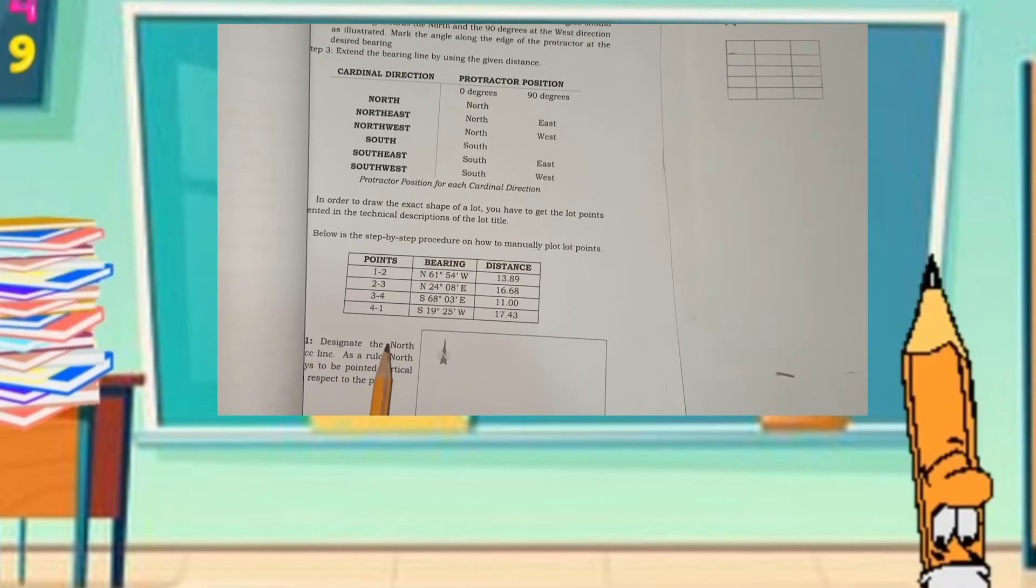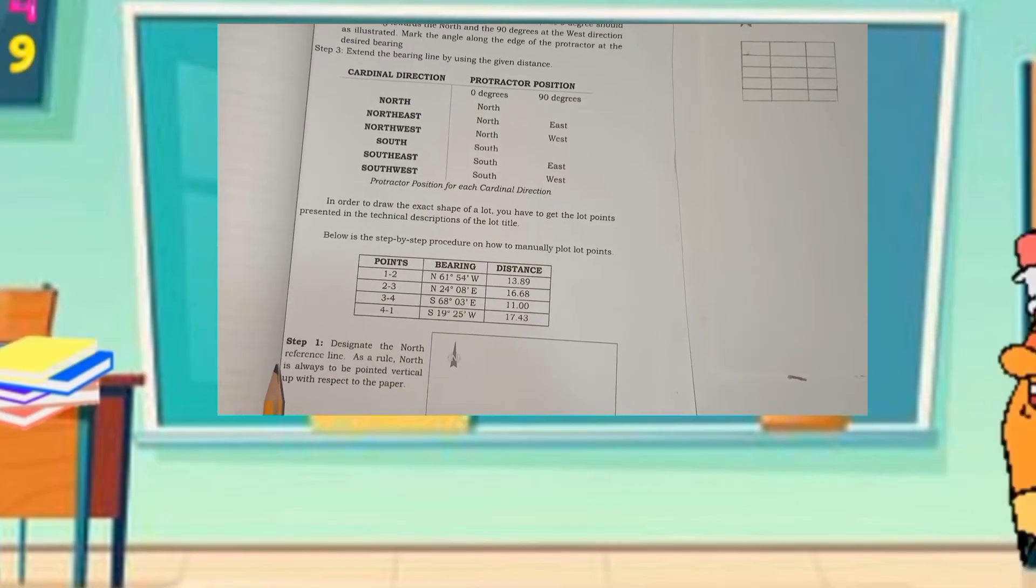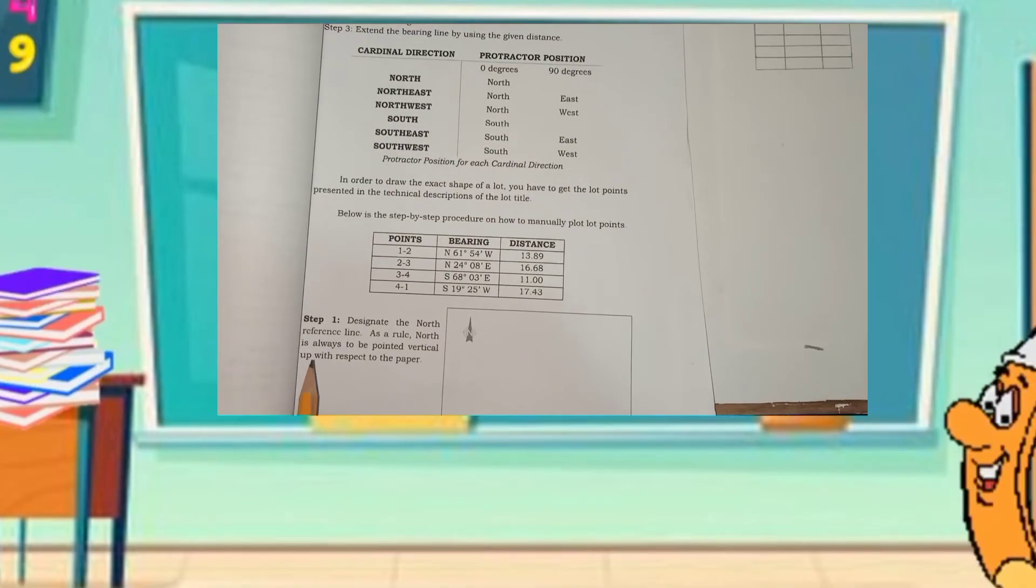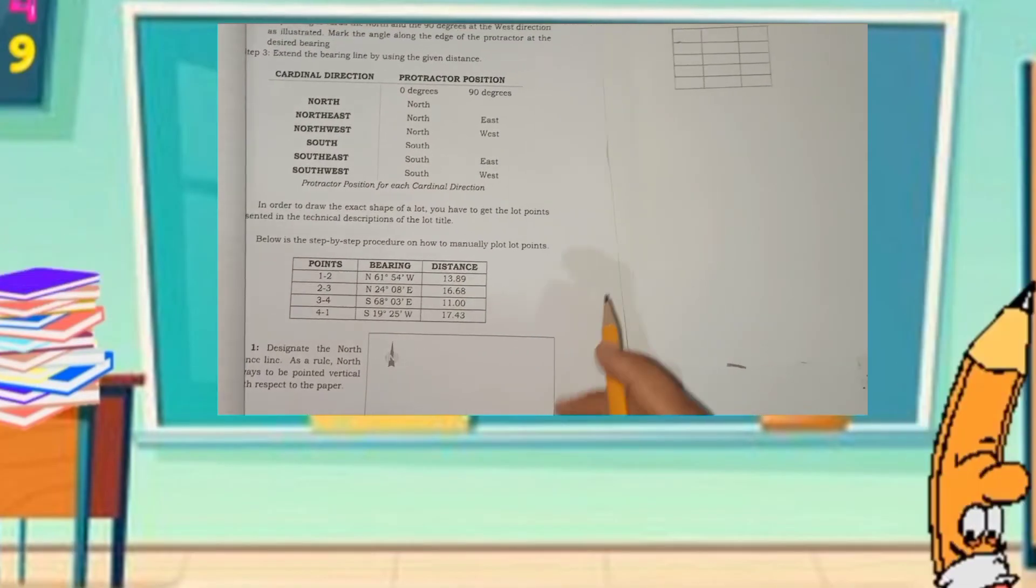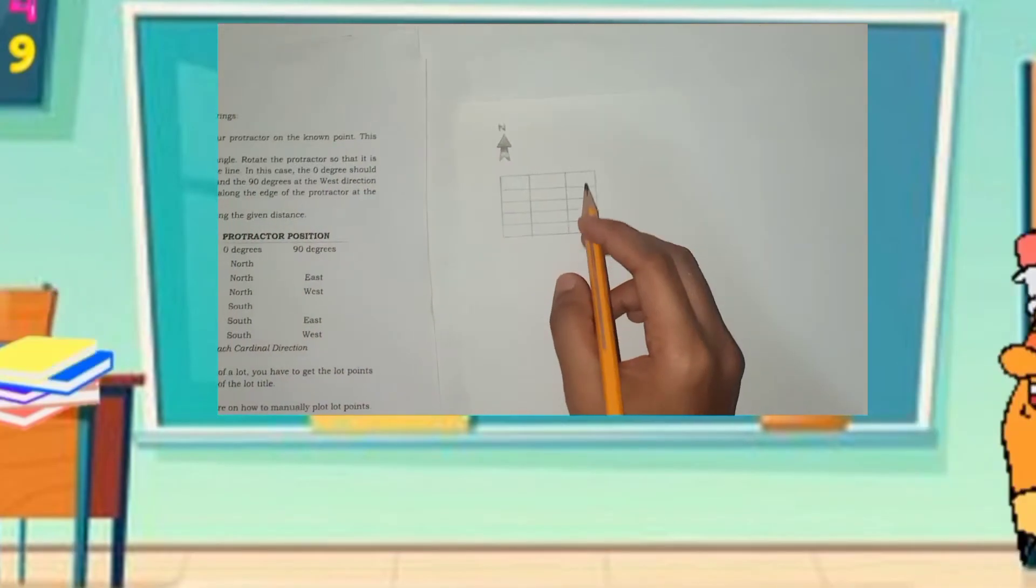Step number one, designate the north reference line. As a rule, north is always to be pointed vertical up with respect to the paper.